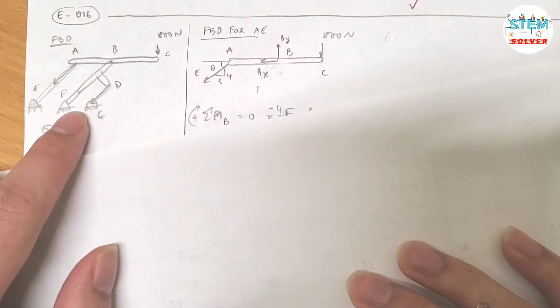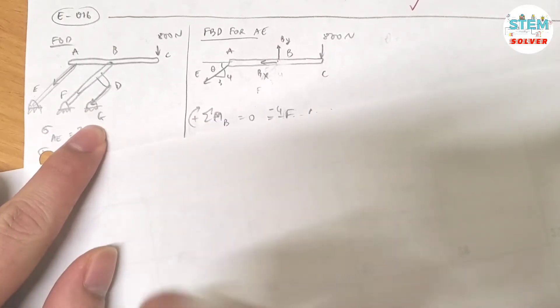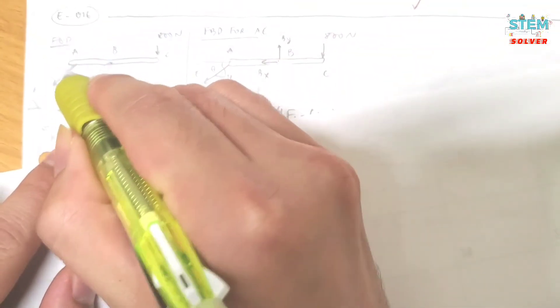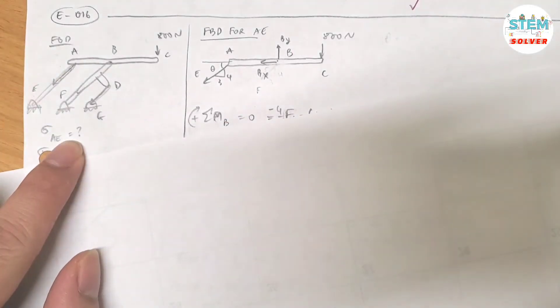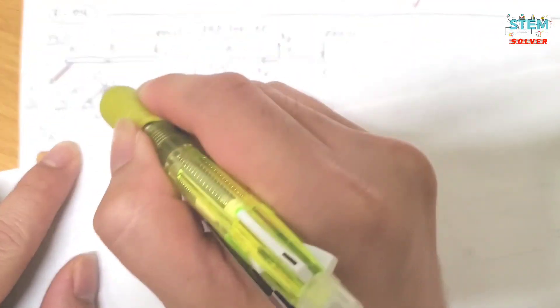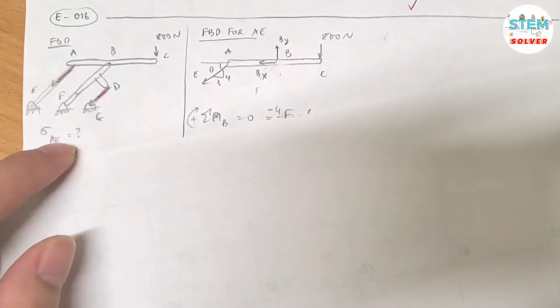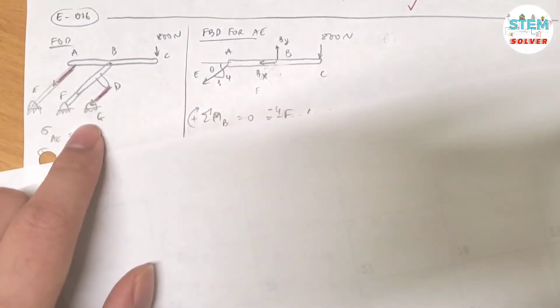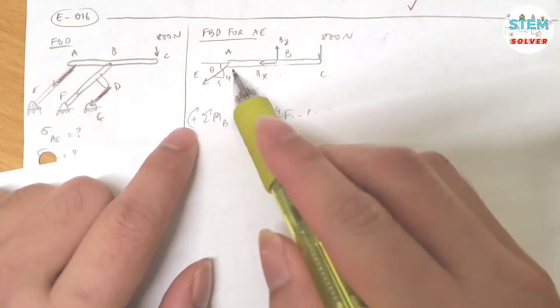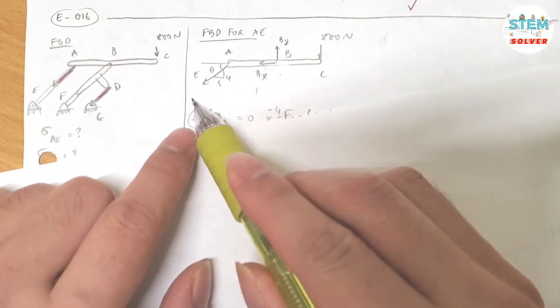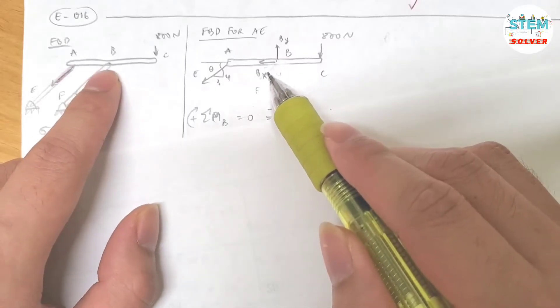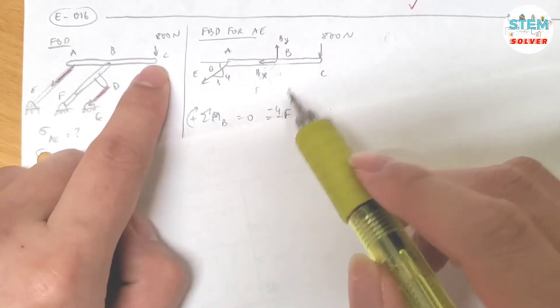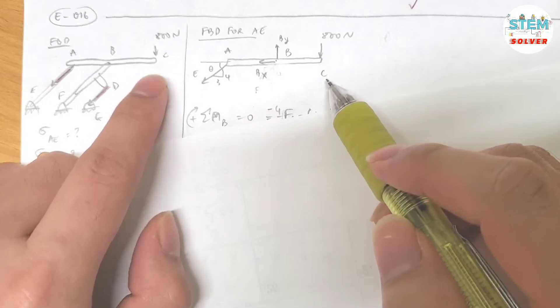So here's the free body diagram for it. We're asked to find the normal stress in this member and this member, knowing that they are parallel to each other. So you have AE at B, you have a pin joint with forces in the x direction and the y direction, and 800 newtons down at C.